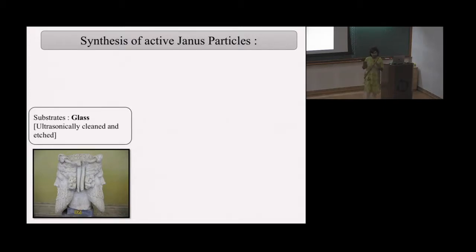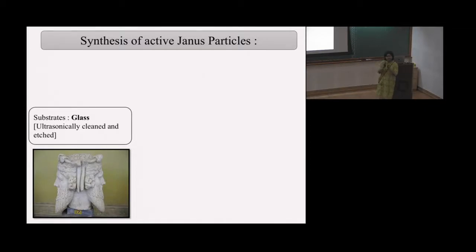We make particles in the lab that look a lot like Janus. They have two different, chemically modified surfaces — two hemispheres with completely different chemical conformations.